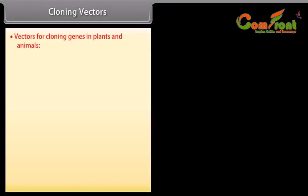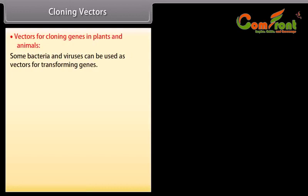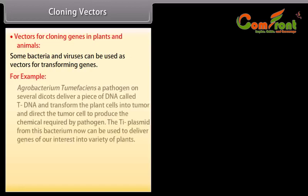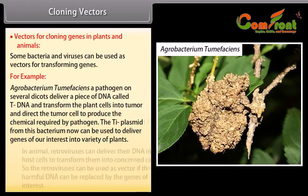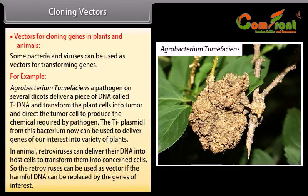Vectors for cloning genes in plants and animals. Some bacteria and viruses can be used as vectors for transforming genes. For example, Agrobacterium tumefaciens, a pathogen on several dicots, delivers a piece of DNA called T-DNA and transforms plant cells into tumor cells, directing them to produce chemicals required by the pathogen. The Ti-plasmid from this bacterium can now be used to deliver genes of our interest into a variety of plants. In animals, retroviruses can deliver their DNA into host cells to transform them, and so retroviruses can be used as vectors if the harmful DNA is replaced by genes of interest.